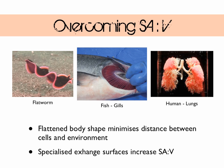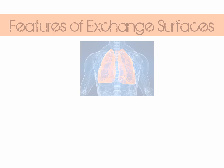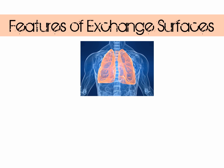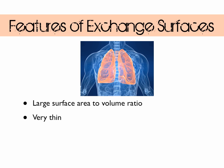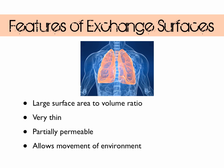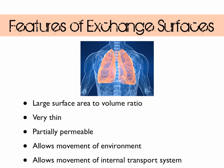Now we're going to look at the features of specialised exchange surfaces. They increase the surface area to volume ratio of the organism. They're always very thin to minimise the diffusion distance. And they're partially permeable to allow substances to pass through. They also allow the movement of the environment through or over the surface — for example, water moves over the gills of a fish and air moves in and out of the lungs of mammals. They also allow the movement of the internal transport system, for example, blood.